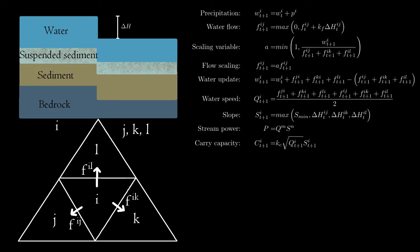We consider a triangle I, surrounded by triangles J, K, and L. We define a flow variable F, where F(I,J) represents the flow from triangle I to triangle J. We calculate the flow in the next iteration by adding a term to the current iteration's flow. The term contains a parameter KF, which is a flow speed, and delta H, which is the difference in total elevation between tile I and J. We use a max function to not allow negative flows. We do the same for each direction and then need to scale the flow values, since without scaling, more water can flow out from a tile than there is water in it. After scaling and flow calculation, we update the water values by adding the incoming flow and removing the outgoing flow.